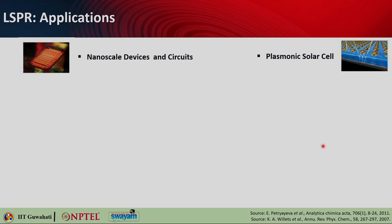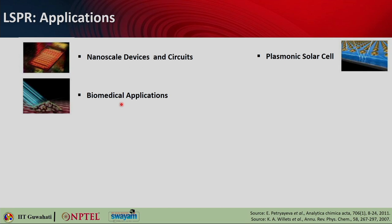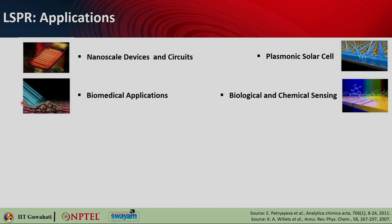Applications of nanoparticles and LSPR range from nanoscale devices and circuits, switching applications, and absorbers in plasmonic solar cells. You can also inject gold nanoparticles with biomarkers so they deposit on tumor cells. When you shine infrared light through human skin, it penetrates and gets absorbed by those nanoparticles, generating heat that kills tumors by thermal ablation. Nanoparticles can also be used for biological and chemical sensing, since the near field gets enhanced in their presence, boosting molecular signatures.